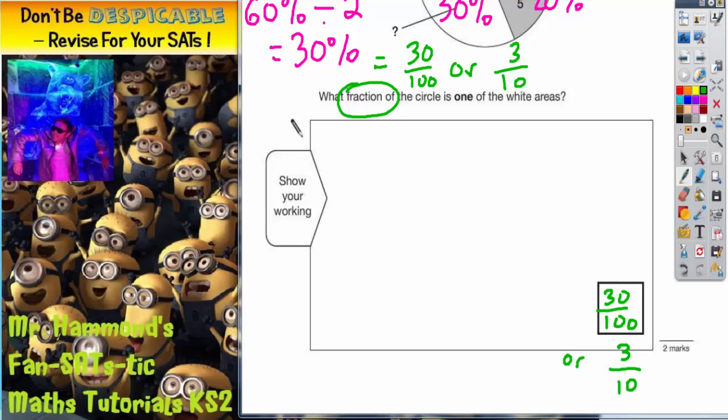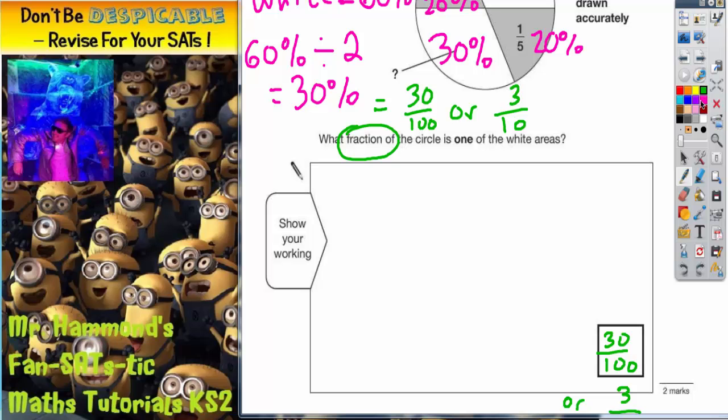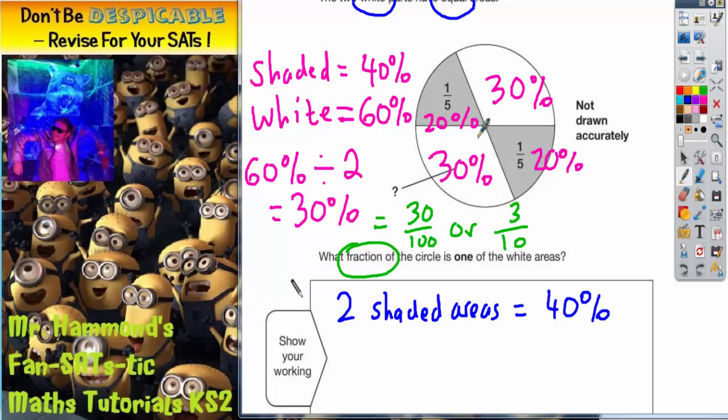So, as for the working out, what should we have written down? Well, we should have said that two shaded areas equal 40%. We've got that from the picture. 20 and 20 makes 40%.